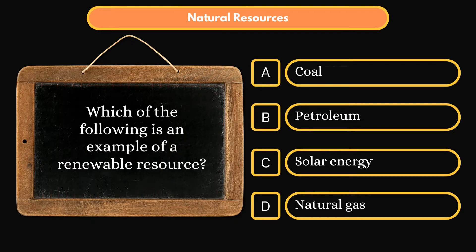Which of the following is an example of a renewable resource? Option A: Coal. Option B: Petroleum. Option C: Solar Energy. Option D: Natural Gas. Correct answer is Option C: Solar Energy.